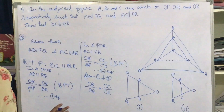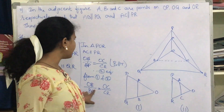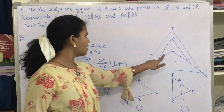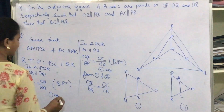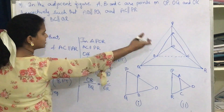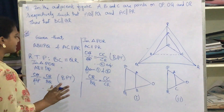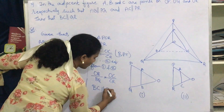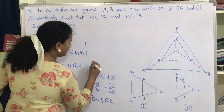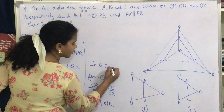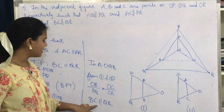Now consider triangle OQR. In triangle OQR, we know that OB/BQ = OC/CR. By the converse of the Basic Proportionality Theorem, where the two sides are divided in the same ratio, the line drawn is parallel to the third side. Therefore, BC is parallel to QR.